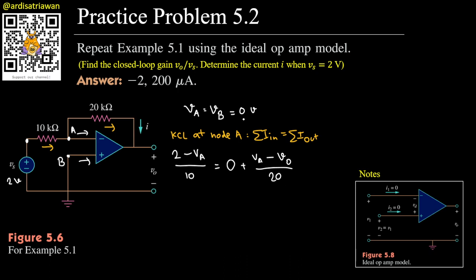Let's plug in that va is equal to zero, so I'll have 2 over 10, and this one will be zero minus v0, that will be minus v0 over 20. We can solve this for v0, so we'll have v0 is just minus 20 multiplied by 2 is 40, 40 divided by 10 is minus 4 volts. So we'll have v0 is minus 4 volts.